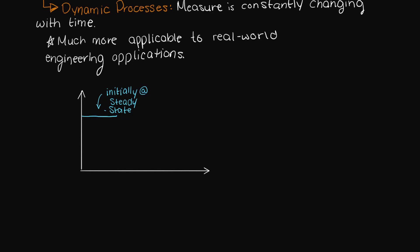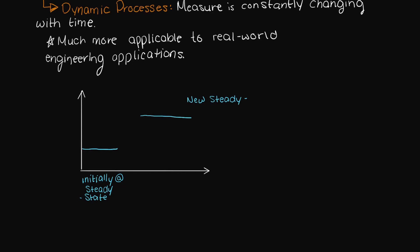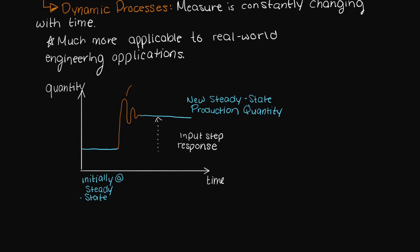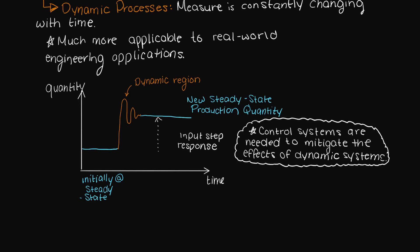Just for an example, let's imagine you are operating a piece of machinery that is operating near steady state. But to account for an added order you need to increase production quantity. The machine is going to have to adjust to your new input step, which we have been talking about in the previous few videos. As you can see here, in between our two steady state regions we have a dynamic region. In addition, many systems typically look pretty crazy with time, and that is why control systems are needed to mitigate and fix this so it more closely approximates a constant value.